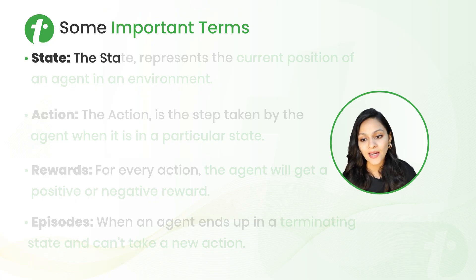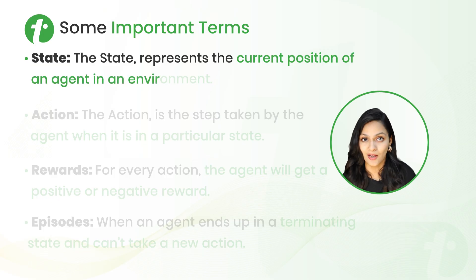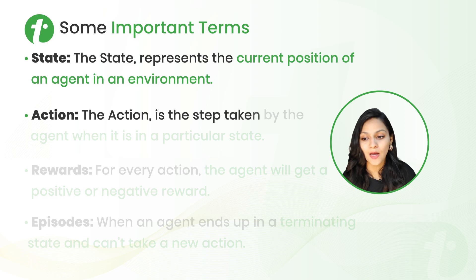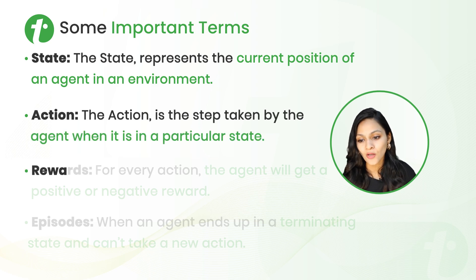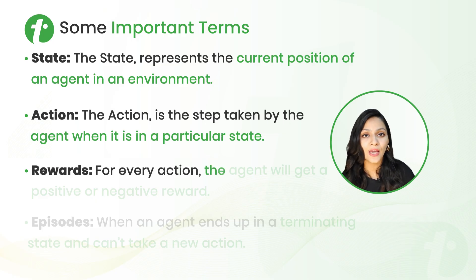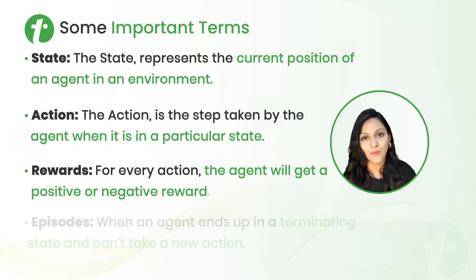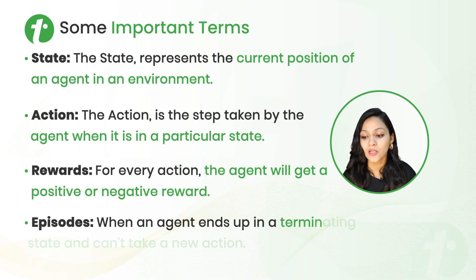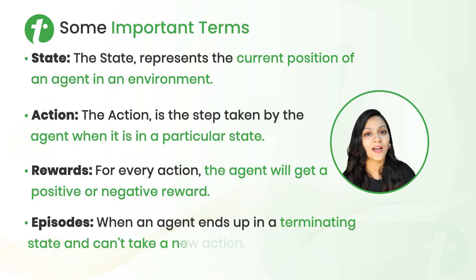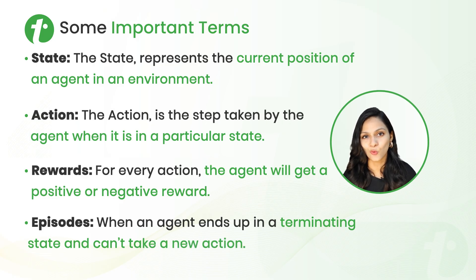We have state — the state represents the current position of an agent in an environment. Action is the step taken by the agent when it is in a particular state. Rewards — for every action, the agent will get a positive or negative reward. Episodes — when an agent ends up in a terminating state and can't take a new action, maybe a character in a game died, that will be a whole episode.